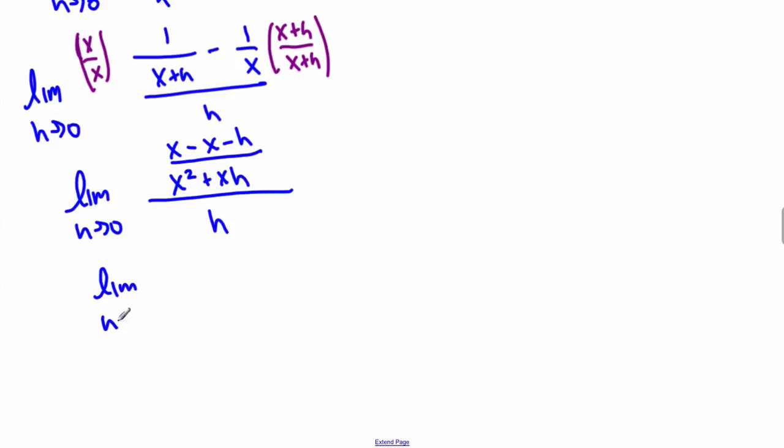Limit as h approaches 0, x minus x goes away, so we're left with minus h, all over x squared plus xh, all over h, but I'm going to rewrite this as multiply by 1 over h, so then I have 1 over h right here. Okay, that will cancel.